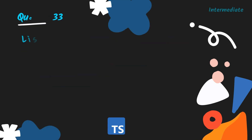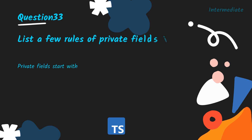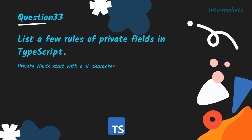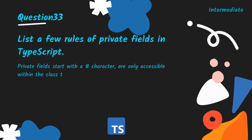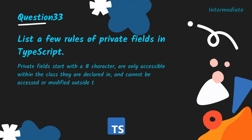List a few rules of private fields in TypeScript. Private fields start with a hash character (#), are only accessible within the class they are declared in, and cannot be accessed or modified outside the class.